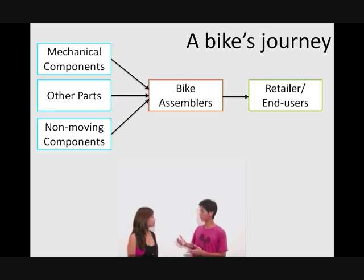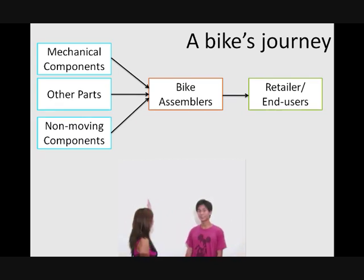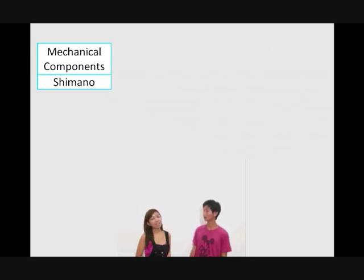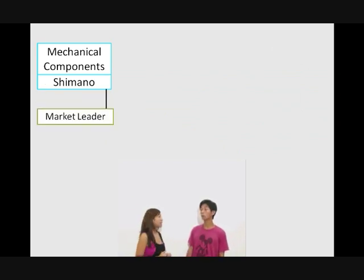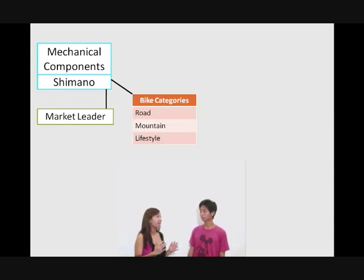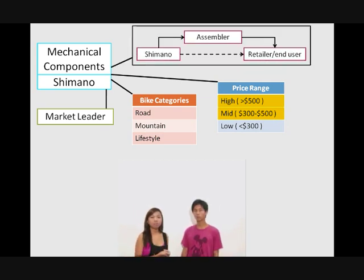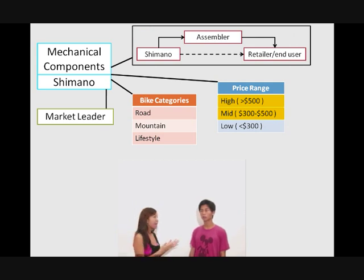So where does our company Shimano come in? Well, Shimano actually lies in the mechanical components sector, and it is also the market leader. It manufactures components for all three categories of bicycles, and it targets the high end as well as the mid end price range. It sells its goods directly to the end users, or it sells to the bike assemblers who then build the entire bike for the end users.